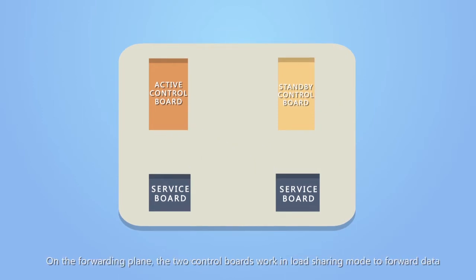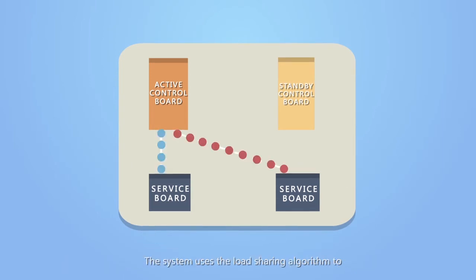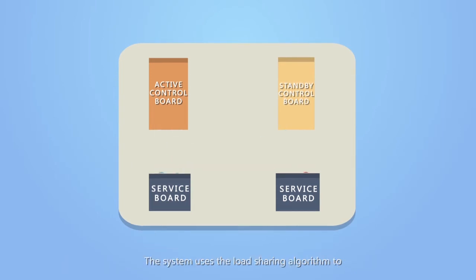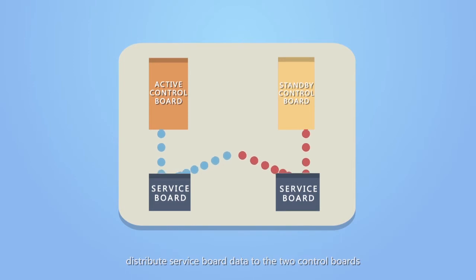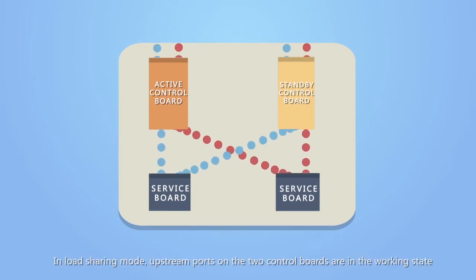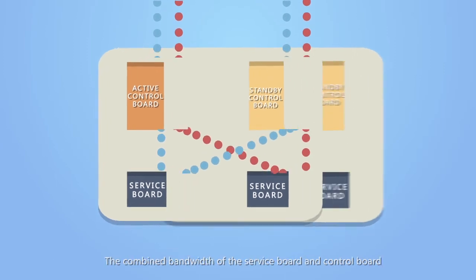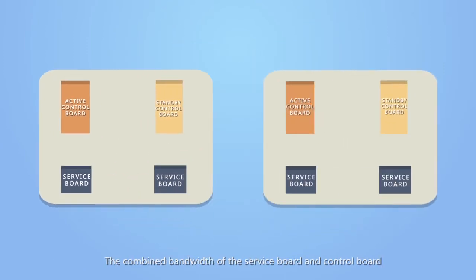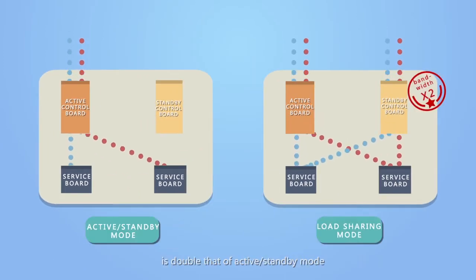On the forwarding plane, the two control boards work in load sharing mode to forward data. The system uses the load sharing algorithm to distribute service board data to the two control boards. In load sharing mode, upstream ports on the two control boards are in the working state. The combined bandwidth of the service board and control board is double that of active standby mode.